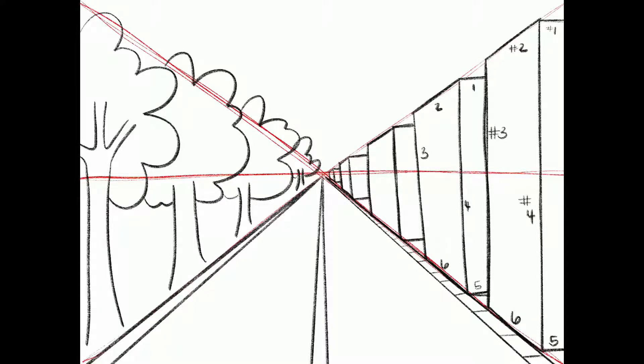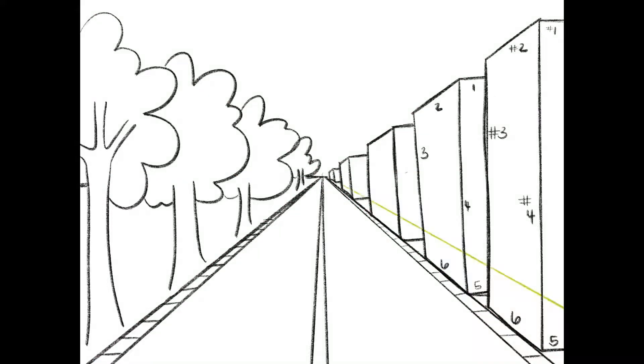I'm adding the details on the sidewalks which are parallel to the bottom of my paper and then I'm ready to start my doors. For the doors I'm going to use another vanishing point line. Starts at my vanishing point and angles out. This is how I know where to draw the tops of my doors and the tops of my windows. These are my guidelines.